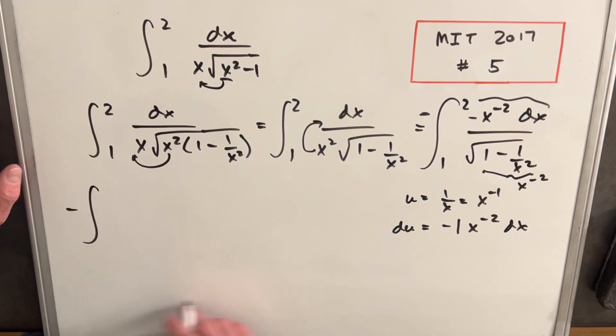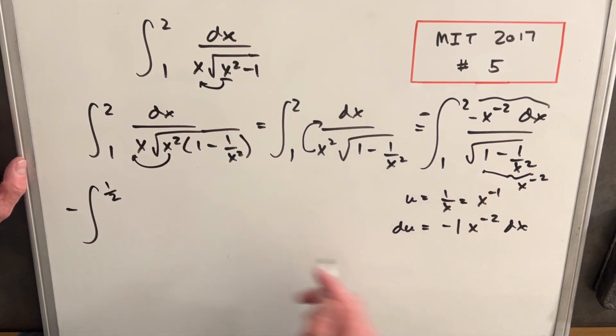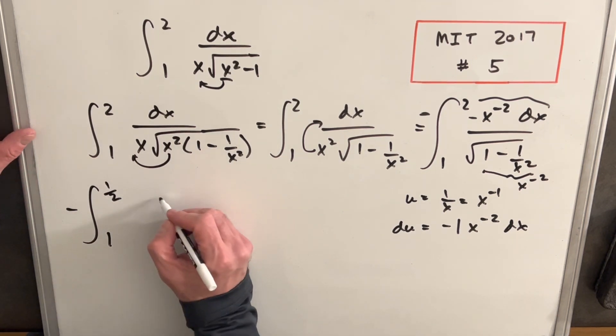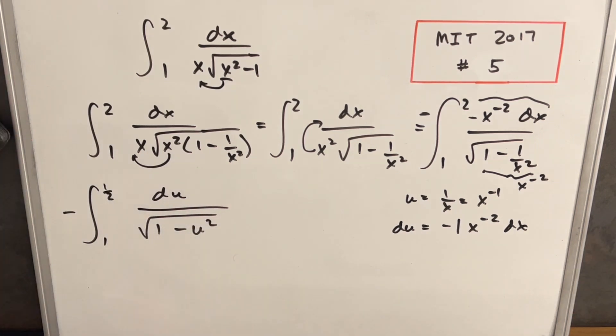So let's update our bounds of integration. If we plug a two in for one over x, we're going to have a half. If we plug a one in, we're going to have one. And then, like I said, our numerator is du. And then our denominator is going to be square root of one minus u squared. But then I can change this minus sign to a plus. And then we can just update our bounds of integration. So we'll make this from one to one half.